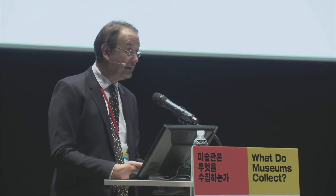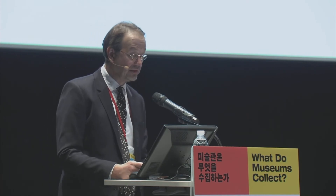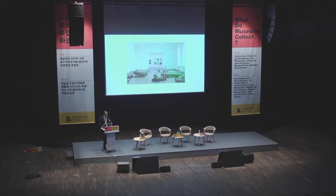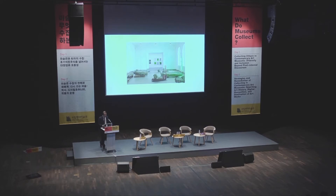Beuys is also famous for his land art project '7000 Oaks: City Forestation Instead of City Administration,' which he started at Documenta 7 in 1982 in Kassel. His concept was to plant 7,000 oak trees and place a basalt stone next to each of them. It took five years for all 7,000 trees to be planted — the last one was planted at Documenta 8 in 1987, at a time when Beuys was already dead. There is a work in the National Gallery that refers to this project: the installation 'The End of the Twentieth Century' from 1982–83. Joseph Beuys had the basalt stones extracted from an extinct volcano in northern Hessen. The stones stand for the origin and evolution of mankind, its future and history, including human interferences with nature.